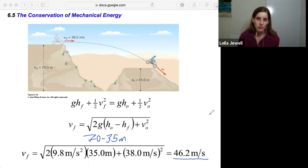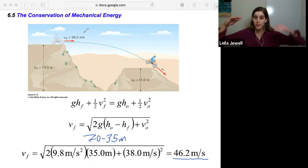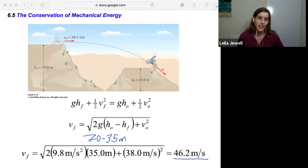Does this make sense? Well, let's check. It's a higher speed than the initial speed. Should it be a higher speed than the initial? Well, we can think about, okay, we have lost potential energy. That potential energy has become kinetic energy. So it is reasonable that the motorcycle would be traveling faster overall at this lower point because it has more kinetic energy, less potential energy.